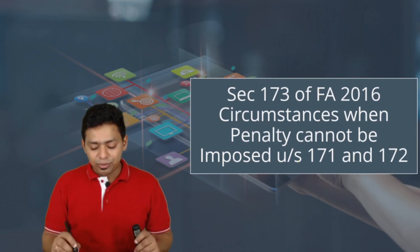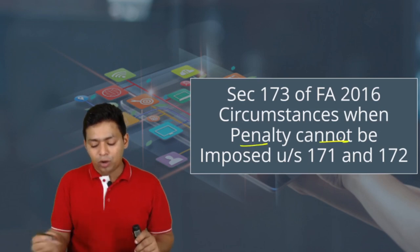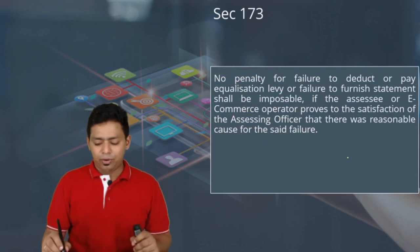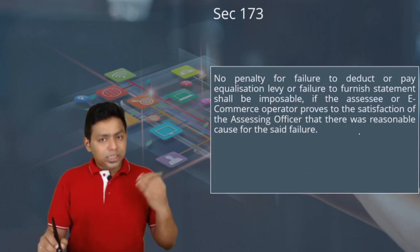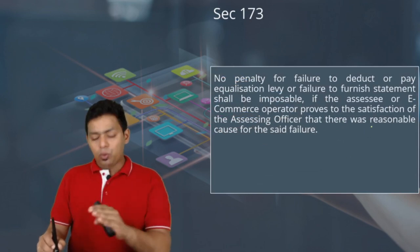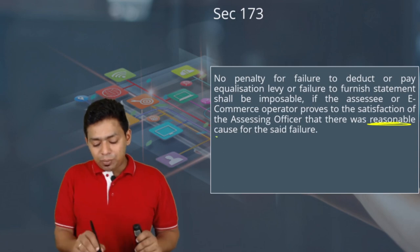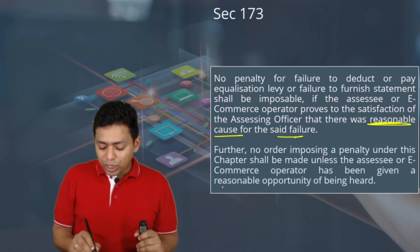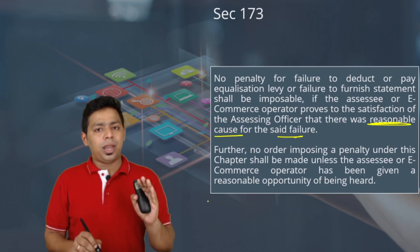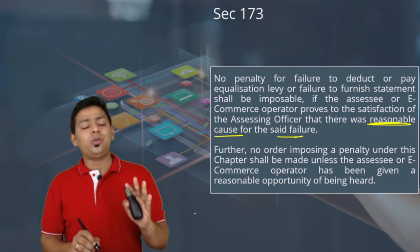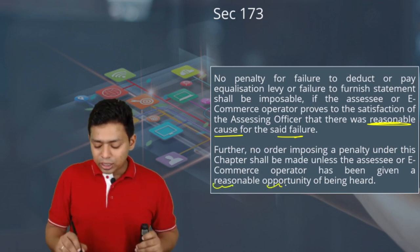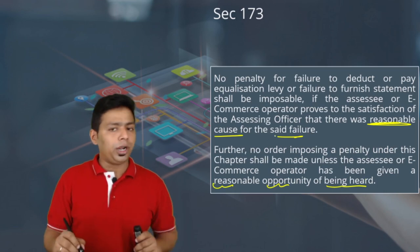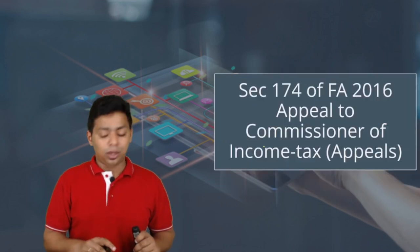Section 173 deals with circumstances when penalty cannot be levied. Penalty cannot be imposed when the assessee proves to the AO, and the AO is satisfied, that there was a reasonable cause for the failure. Also, before levying any penalty, a reasonable opportunity of being heard must be provided to the e-commerce operator or assessee.